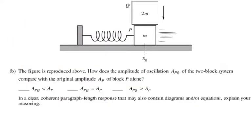For B part, for the B part, the question is, the figure is reproduced above, how does the amplitude of oscillation of APQ of the two-block system compare with the original amplitude of AP of the block P alone? So the choices that they give you is the new amplitude is less, the new amplitude is equal, or the new amplitude is greater than the one that was before.